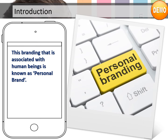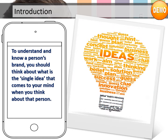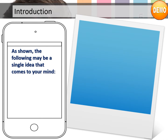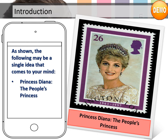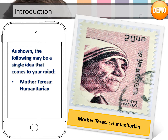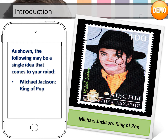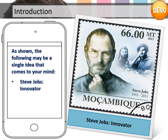This branding that is associated with human beings is known as a personal brand. To understand a person's brand, think about what single idea comes to your mind when you think about that person. For example: Princess Diana — the People's Princess; Mother Teresa — humanitarian; Michael Jackson — King of Pop; Steve Jobs — innovator.